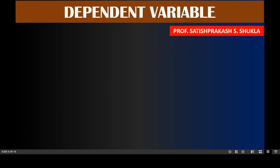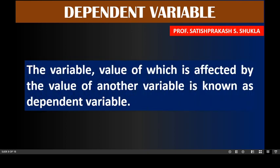Now we will see the meaning of dependent variable. The variable whose value is affected by the value of another variable is known as dependent variable. The tendency of dependent variable is to be affected by some other variable — the independent variable. It means there is a cause and effect relationship between independent and dependent variable.